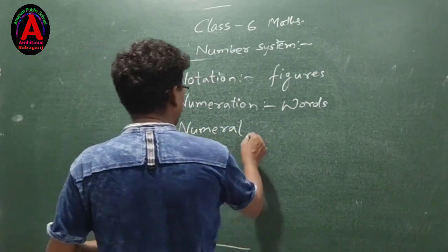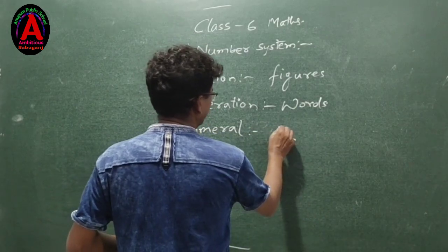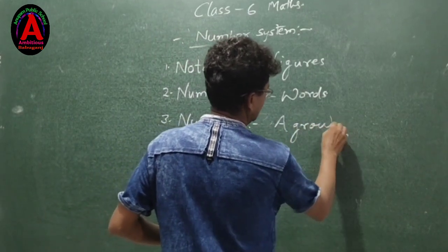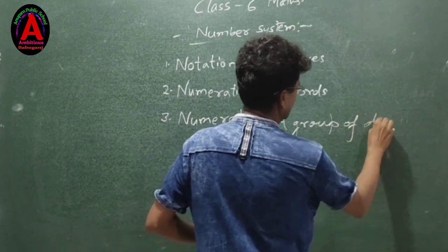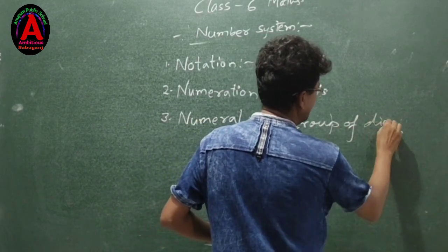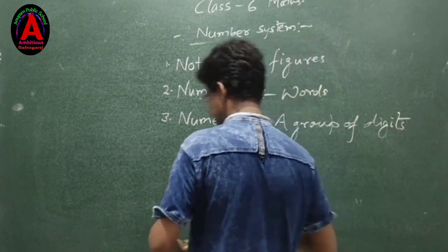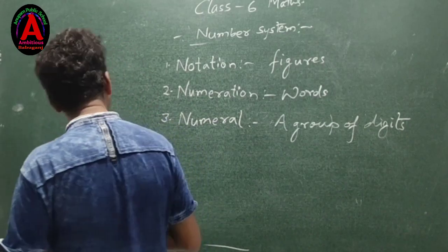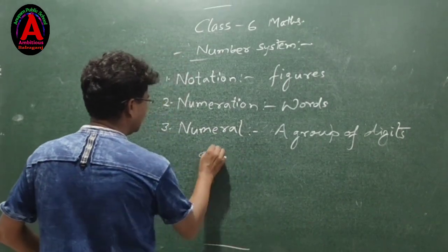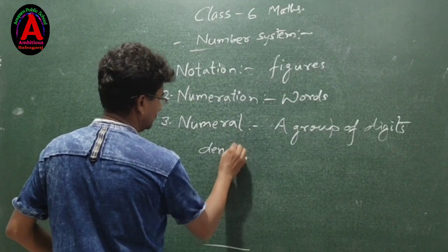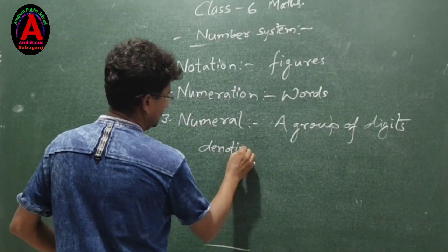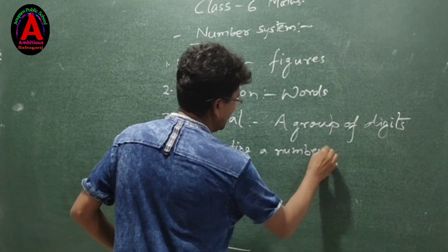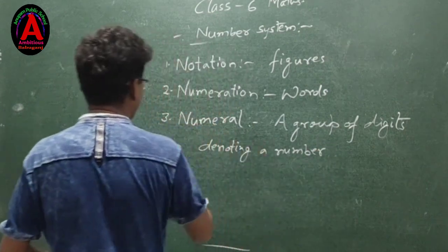A group of digits denoting a number is called a Numeral.